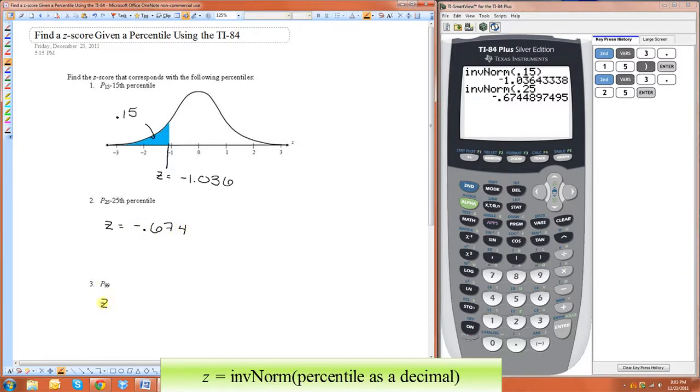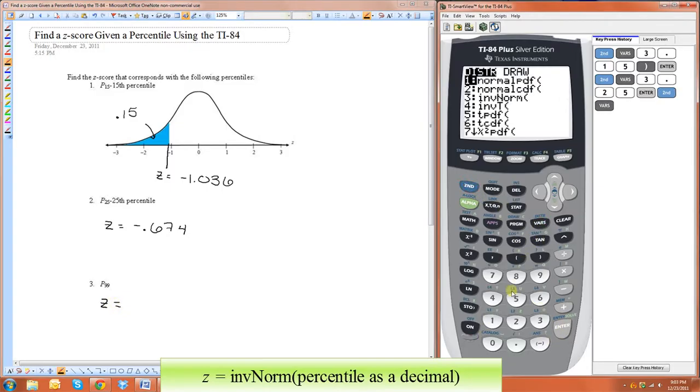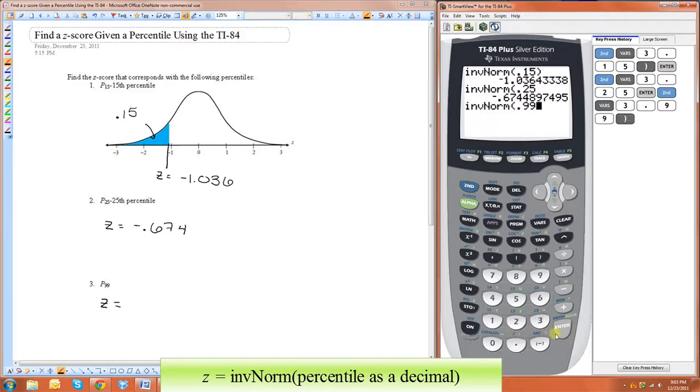And for 99, it's going to be the invNorm, 0.99. So it's going to be 2.326.